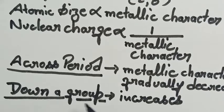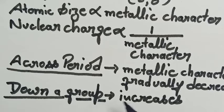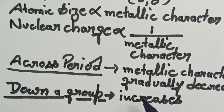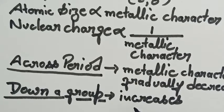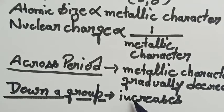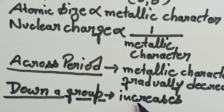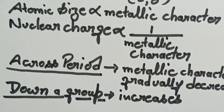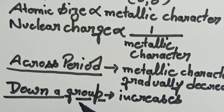While going down a group, the metallic characteristic increases. The reason behind this is that as one moves down a group, an extra electron shell is added after every change of period. Thus, the hold of the nucleus on the valence electron gradually decreases, meaning the element can easily donate electrons to form an electropositive ion. Thus, while moving down a group, the metallic characteristic increases.